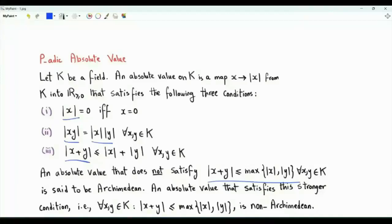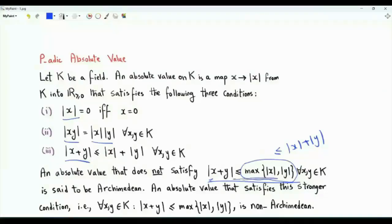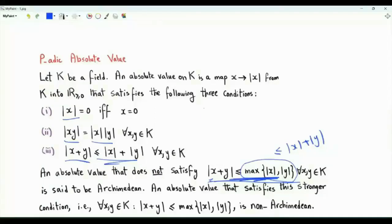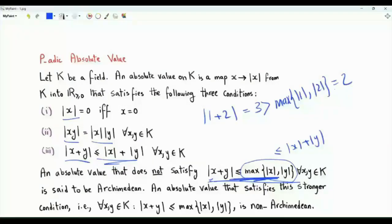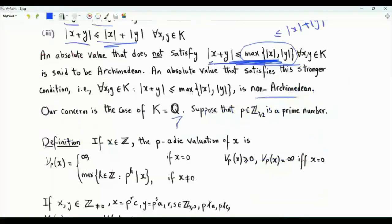There is a stronger inequality: the absolute value of x plus y is less than or equal to the maximum of the absolute value of x and the absolute value of y. Because the maximum of two non-negative numbers is less than or equal to their sum, if an absolute value satisfies this stronger inequality, it also satisfies the triangle inequality. An absolute value that does not satisfy this stronger inequality — like the conventional absolute value — is said to be Archimedean. For example, the absolute value of 1 plus 2 equals 3, which is strictly greater than the maximum of 1 and 2. If an absolute value does satisfy the stronger version, it is said to be non-Archimedean.